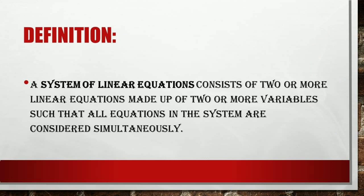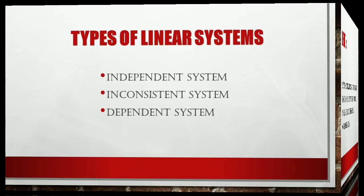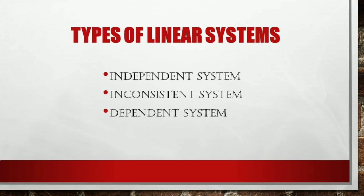Let us define. A system of linear equations consists of two or more linear equations made up of two or more variables such that all equations in the system are considered simultaneously. There are three types of linear systems: independent system, inconsistent system, and dependent system.